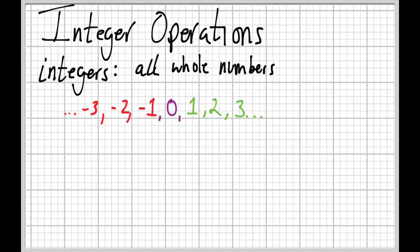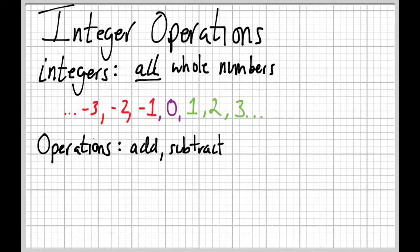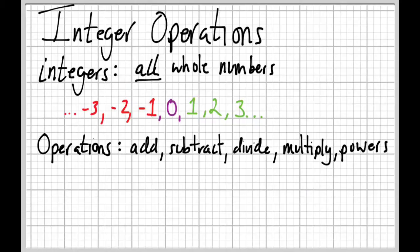Integers go up to infinity and down to negative infinity — all the whole numbers. Now, what are operations? Operations are pretty simple: adding, subtracting, dividing, multiplying, and we're also going to talk about powers. There are more operations, but these are the simplest ones and the ones we do with integers the most. Subtracting can also be referred to as 'take away.'